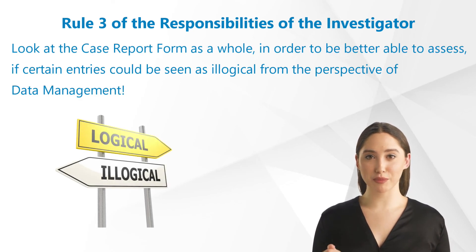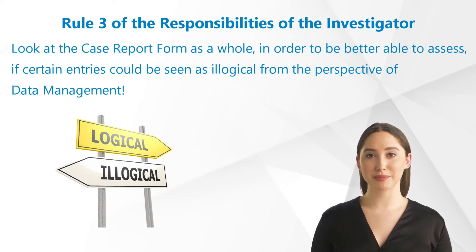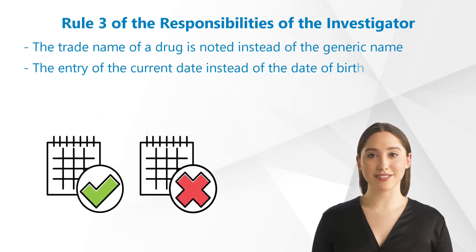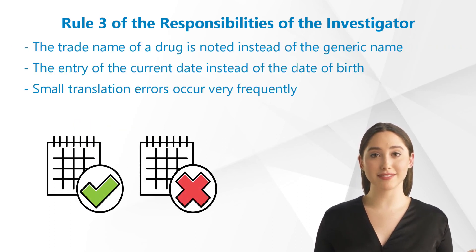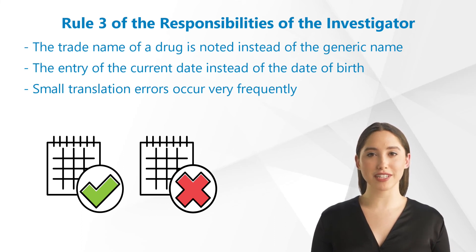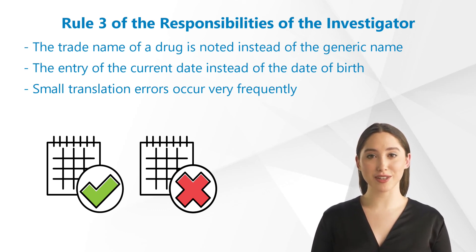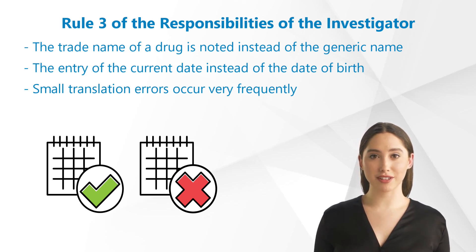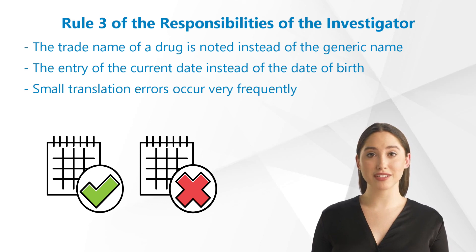Always look at the case report form as a whole in order to better assess if certain entries could be seen as illogical from the perspective of data management. Here you see some examples of typical queries. One of the most common queries refers to the case where the trade name of a drug is noted instead of the generic name. Generic names are identical worldwide; however, the trade names are not. Also, entering the current date instead of the date of birth is a very common error. And finally, small translation errors occur very frequently.